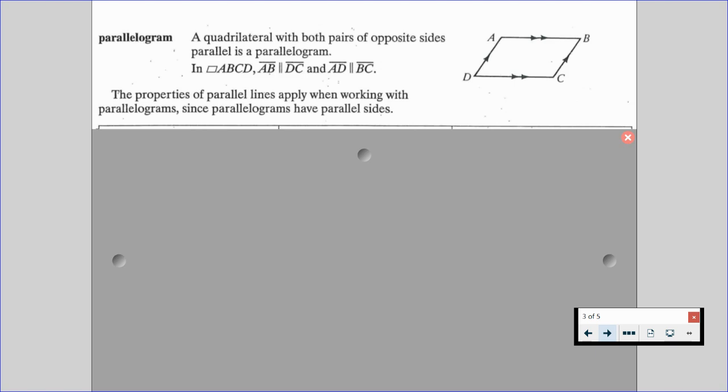So a parallelogram is a quadrilateral with both pairs of opposite sides parallel. That's what's going to be a parallelogram, hence the name parallelogram. Opposite sides are parallel. So in parallelogram ABCD, we know segment AB is parallel to segment DC, and segment AD is parallel to segment BC.